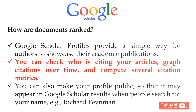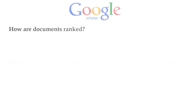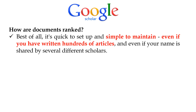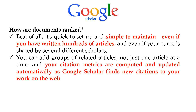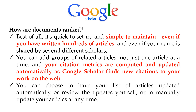For example, Richard Feynman. Best of all, it's quick to set up and simple to maintain, even if you have written hundreds of articles, and even if your name is shared by several different scholars. You can add groups of related articles, not just one article at a time, and your citation metrics are computed and updated automatically as Google Scholar finds new citations to your work on the web. You can choose to have your list of articles updated automatically, review the updates yourself, or manually update your articles at any time.